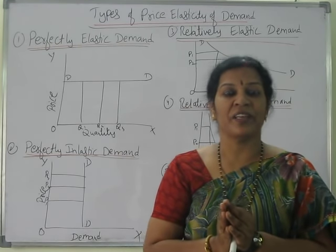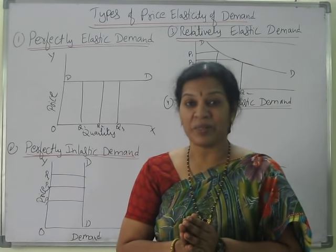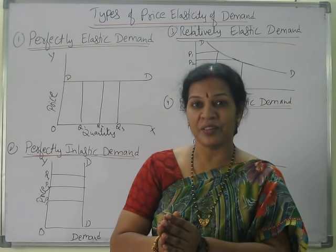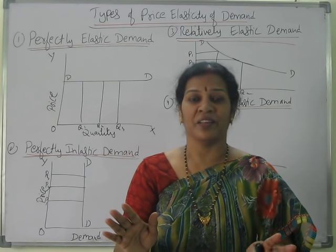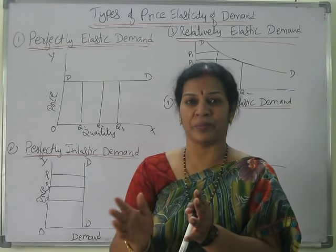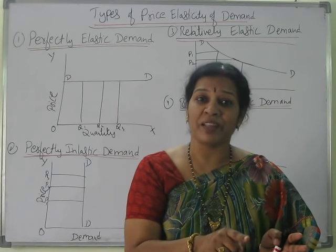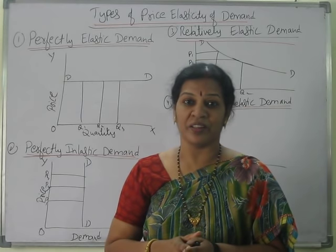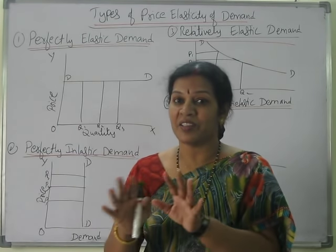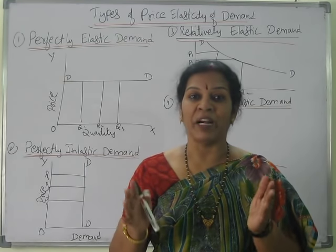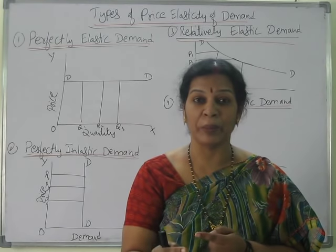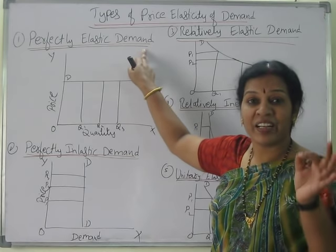For example, seasonal products are the best example. Especially in summer, there will be more demand for air coolers, ACs, and ice cream products. When winter comes, the same products' demand will be less, even though the price is not changing. Similarly, demand for woolen clothes is more in winter and decreases in summer. Though the price is stable, demand keeps varying because of fashion, season, requirement, or change in technology. That is perfectly elastic demand.